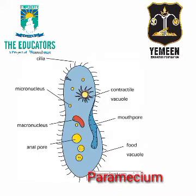Paramecium is also a unicellular organism mostly found in pools and ponds. It has cilia for locomotion. Paramecium feeds on algae, bacteria, etc.